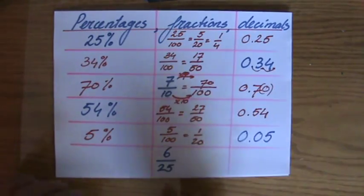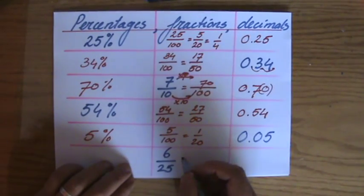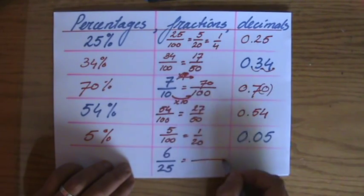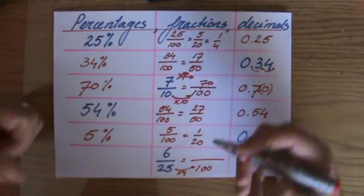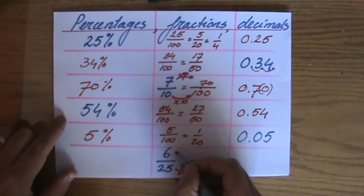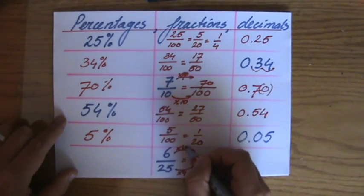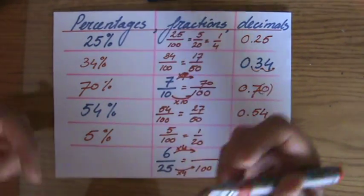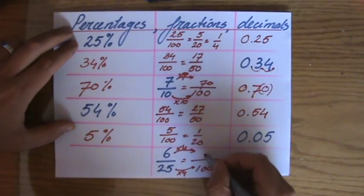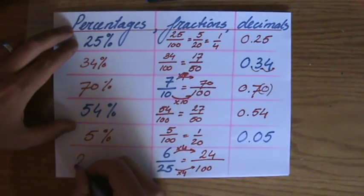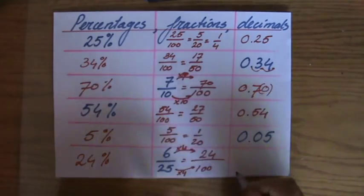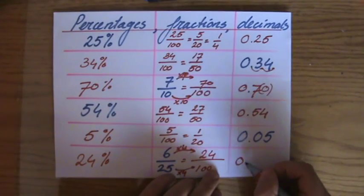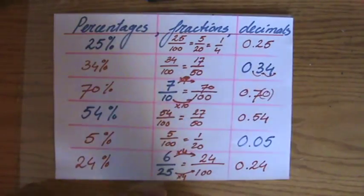6 over 25 — the last one. Let's do the percentage first, which is out of 100. So I multiply by 4: 25 times 4 is 100. But that's only equivalent if I multiply the numerator by 4 as well: 6 times 4 is 24. That makes it 24%, and the decimal is 0.24.